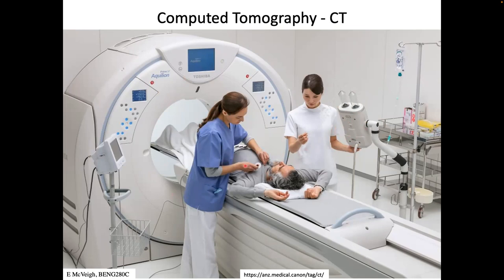Depending on what anatomy you want to image, there's a set of laser lights to align the patient. Scout scans are performed first: you run the patient through the bore while the gantry rotates and take a low-dose projection picture to see where the diaphragm and heart are. These are then used to align the scan to first order.